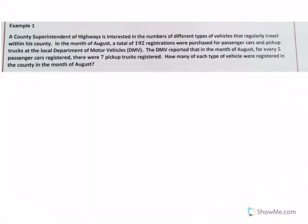This is Example 1, which comes directly from Eureka Math. A county superintendent of highways is interested in the numbers of different types of vehicles that regularly travel within his county. In the month of August, a total of 192 registrations were purchased for passenger cars and pickup trucks at the local Department of Motor Vehicles. The DMV reported that for every five passenger cars registered, there were seven pickup trucks registered. How many of each type of vehicle were registered in the county in the month of August?